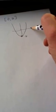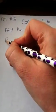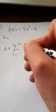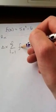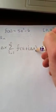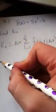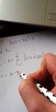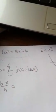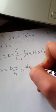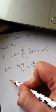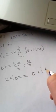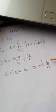We're going to use R sub n, which is equal to delta x times the sum for i equal 1 to n of f of a plus i delta x. The first thing we need is delta x, which equals b minus a over n. Since we're going from 0 to 6, delta x equals 6 over n. So a plus i delta x equals 0 plus i times 6 over n, or just 6i over n.